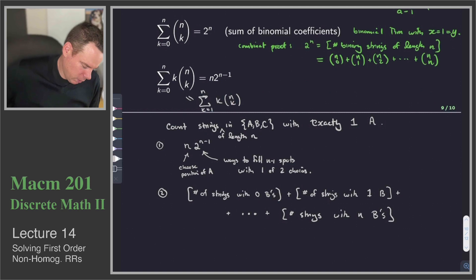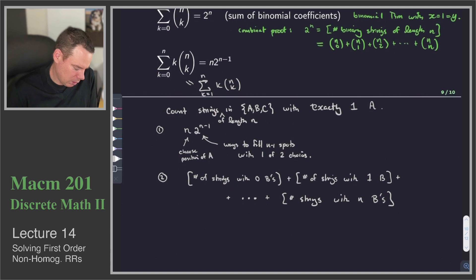You might argue that you can't have n b's because one of those slots has already been chosen for an a. And that's fine. It just means that the number of strings here would be 0. We could stop at n minus 1 b's, but we can go all the way up to n just as long as we get 0 for that value.